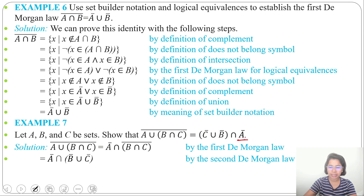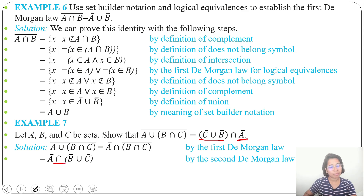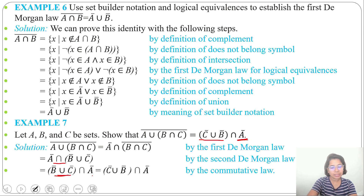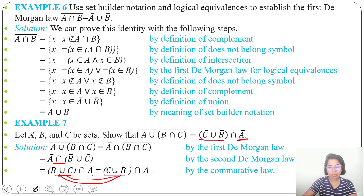Applying De Morgan's law to (B ∩ C)' gives B' ∪ C'. Now matching with the answer: A' is at last, and C' ∪ B' is first. Since intersection is commutative, we can write (B' ∪ C') ∩ A'. Since union is also commutative, we can write C' ∪ B', which matches the answer. Hence it is proved.